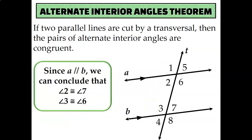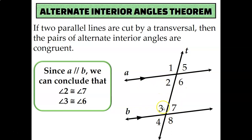We also learned about alternate interior angles, and if they are created from two parallel lines cut by a transversal, then they're congruent as well. In this diagram, angle 2 and angle 7 would be alternate interior angles because they're on opposite sides of the transversal — once on the left and once on the right — and they're in between the two parallel lines, so that makes them interior. Since we have two parallel lines cut by a transversal, each pair of alternate interior angles would be congruent.